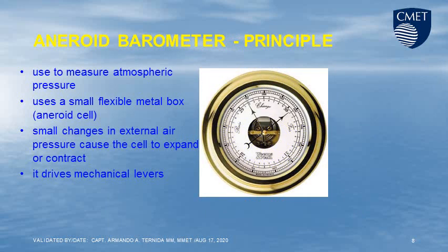The aneroid barometer is also used to measure atmospheric pressure. It uses a small flexible metal box called an aneroid shell. Small changes in external air pressure cause the shell to expand or contract, and it drives mechanical levers.